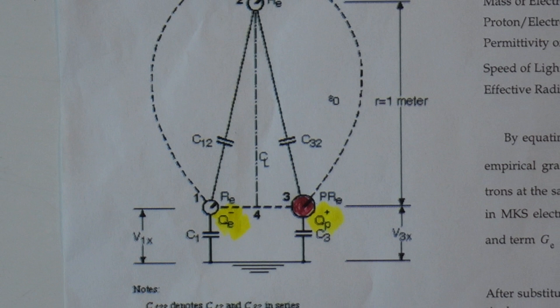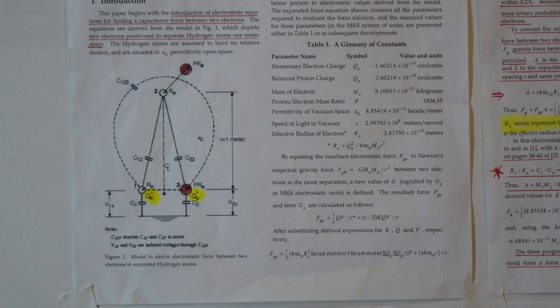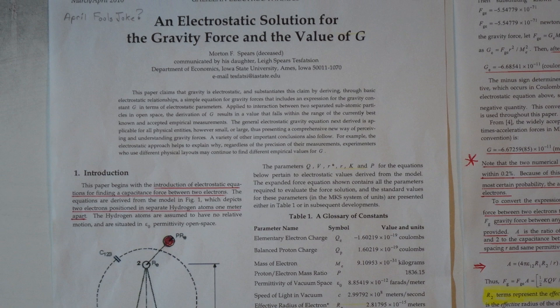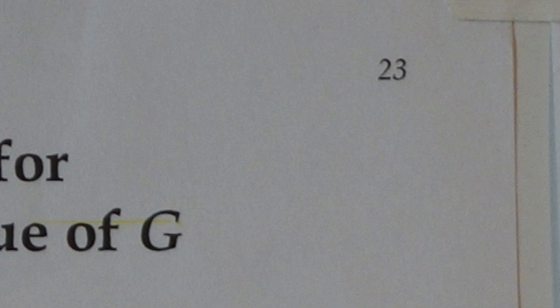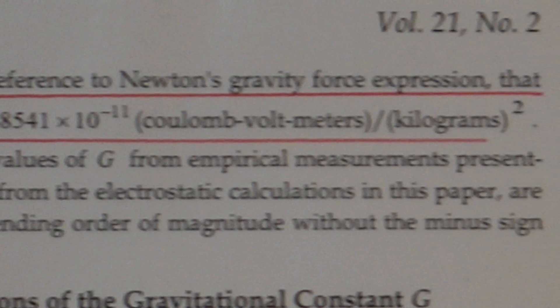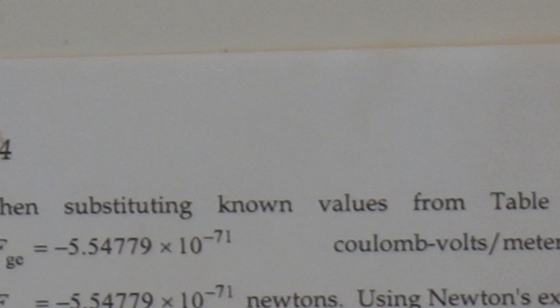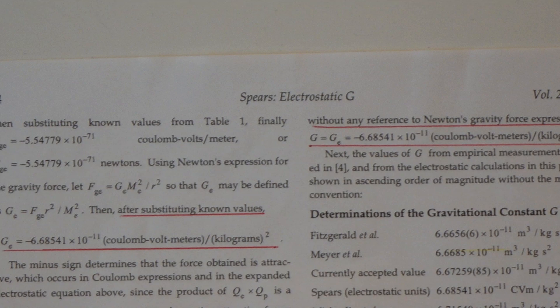I don't have any problems with the diagram — that's just to show you the basis of the paper and the terms of reference. What Spears is indicating in the introduction is that with the introduction of electrostatic equations for finding the capacitance force between two electrons, this diagram depicts two electrons positioned in separate hydrogen atoms spaced one meter apart. There are no errors on page one — it's just an introduction giving a definition of terms. Now we go to the next page, page 24 of this March-April issue of Galilean Electrodynamics.